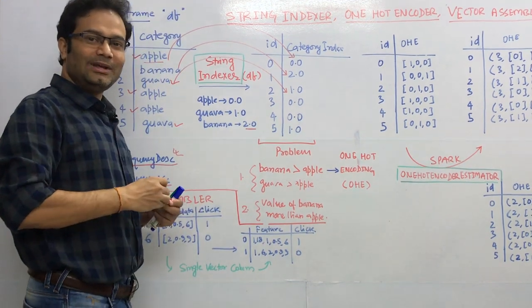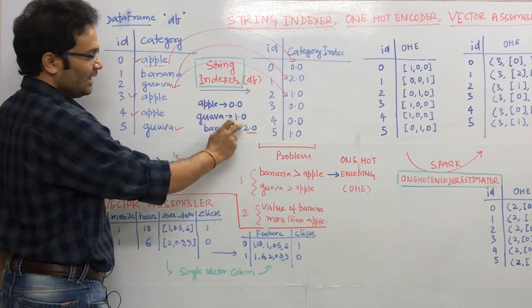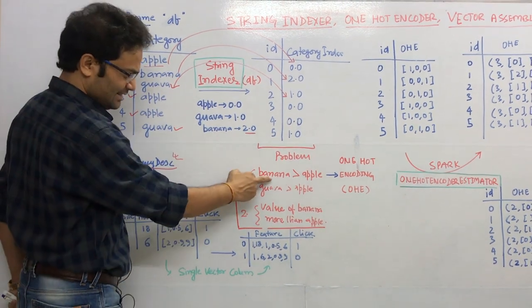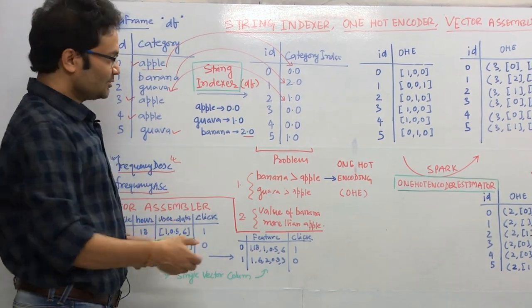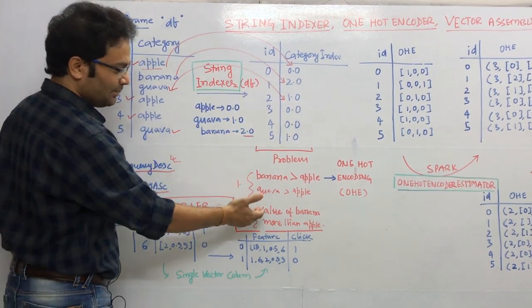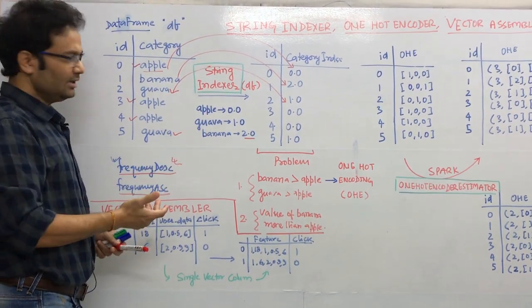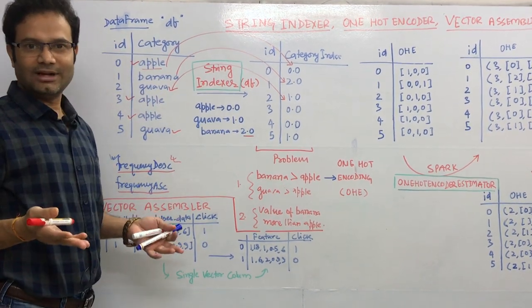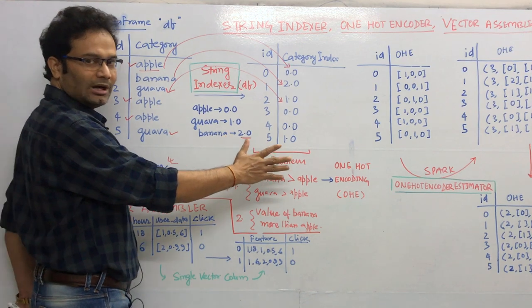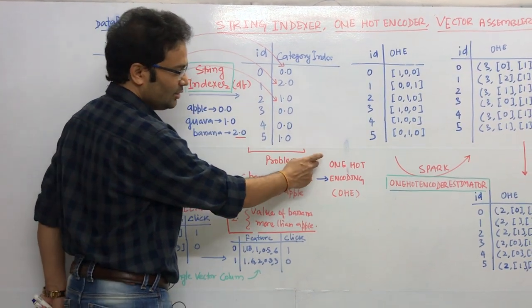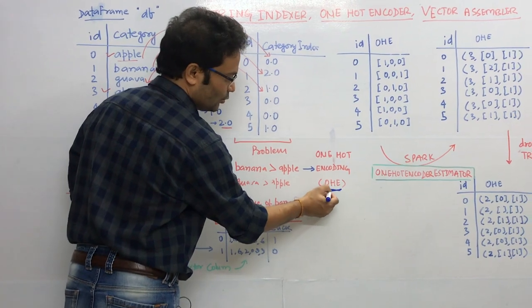However, there is a problem. If we give zero to apple and two to banana, it implies banana is greater than apple — which makes no sense. These are categorical values; banana is not worth more than guava. The machine learning algorithm may misinterpret these numbers as having ordinal meaning. To solve this, we introduce a new concept: One Hot Encoder.